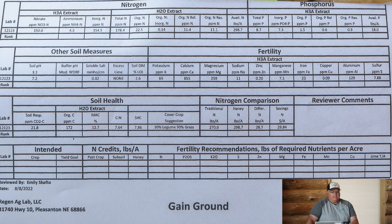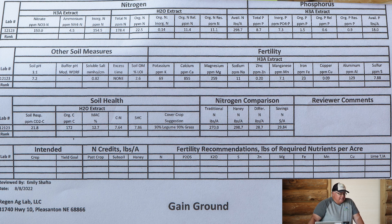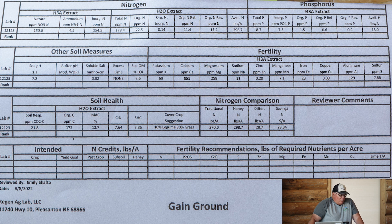If you put the Haney tests one on top of the other, one has a number of 1.94 and the other has a number of 0.14. What does that mean? You want a number greater than one because you want your nitrogen more in the organic form than the inorganic.